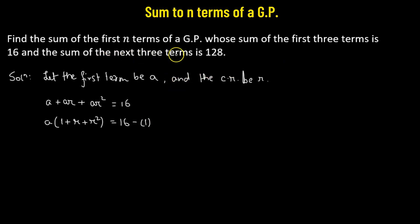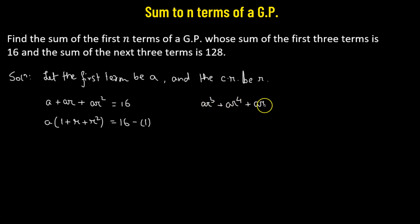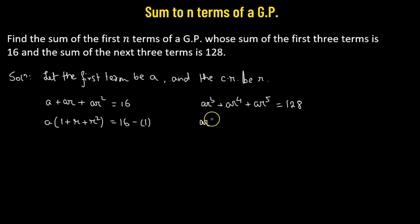The sum of the next three terms: the term after AR² is AR³, followed by AR⁴ plus AR⁵. That sum equals 128. Taking AR³ as the common factor, we have AR³ multiplied by (1 + R + R²) = 128. Let this be equation number 2.